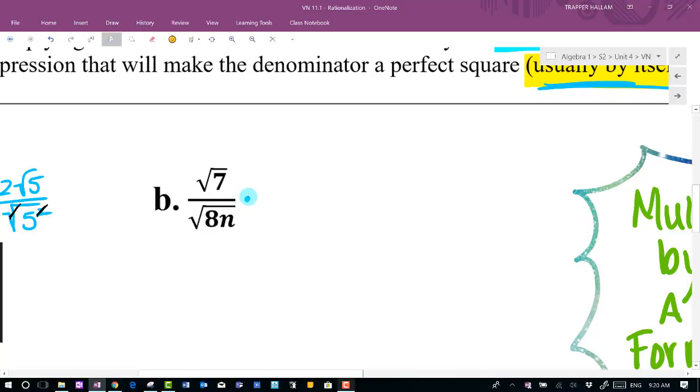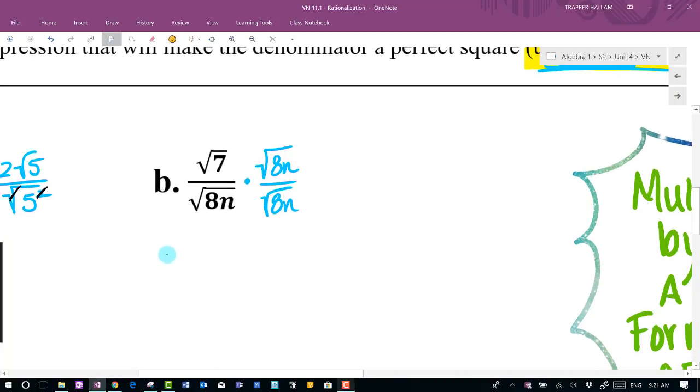In this case, it could go two ways, but this way is just as good. So we're going to multiply again by a form of one, square root of 8n over square root of 8n, or times n. So now we've got this is rationalization. We're going to go ahead and multiply this out.